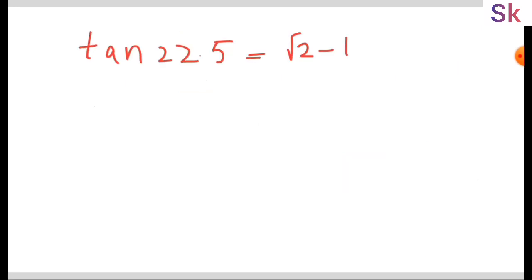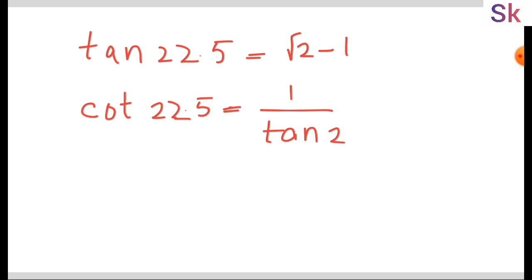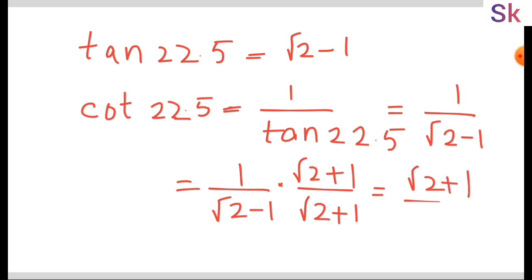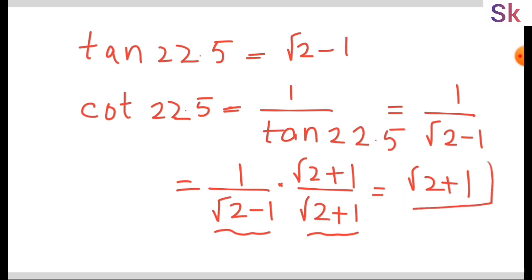So tan 22.5 degrees equals √2 minus 1. Similarly, cot 22.5 degrees is 1 over tan 22.5, which is 1 over (√2 minus 1). Rationalizing by multiplying by (√2 plus 1) over (√2 plus 1), the denominator becomes √2² minus 1² equals 2 minus 1 equals 1. So cot 22.5 degrees equals √2 plus 1. I hope you liked this — if so, please subscribe to my channel. Thank you for watching.